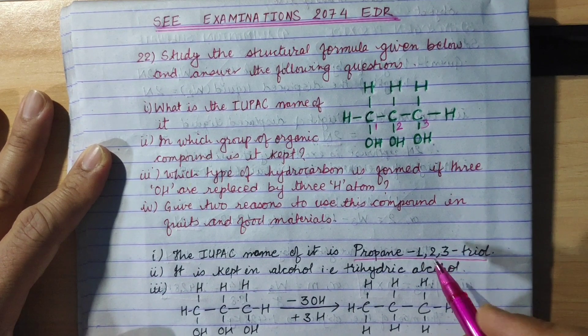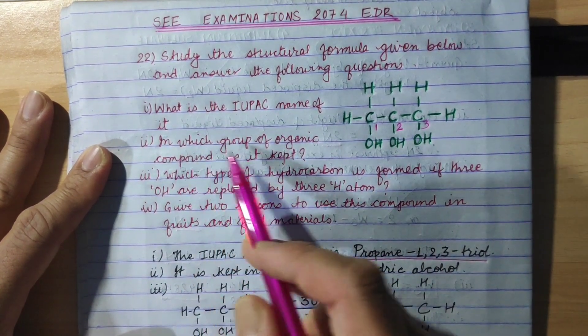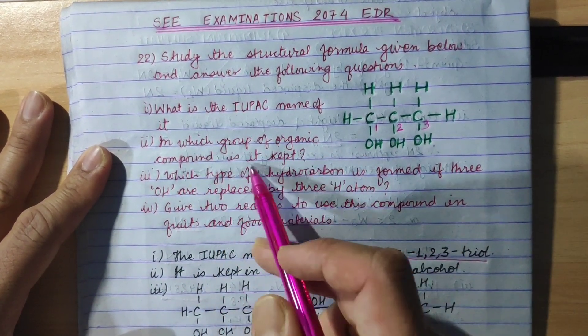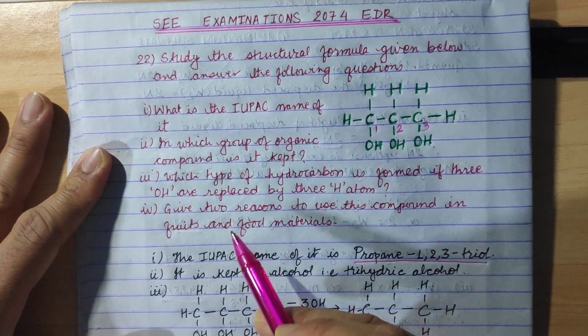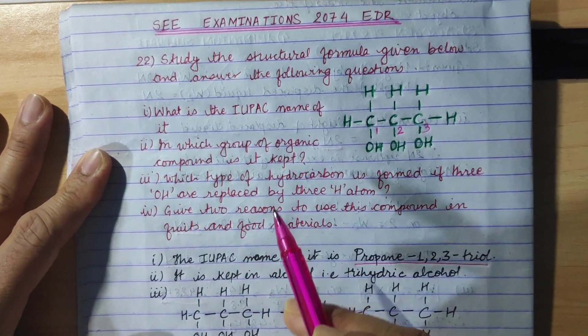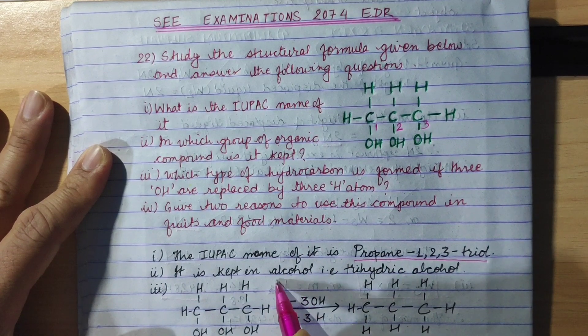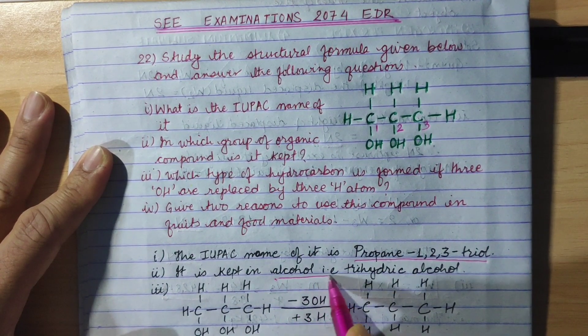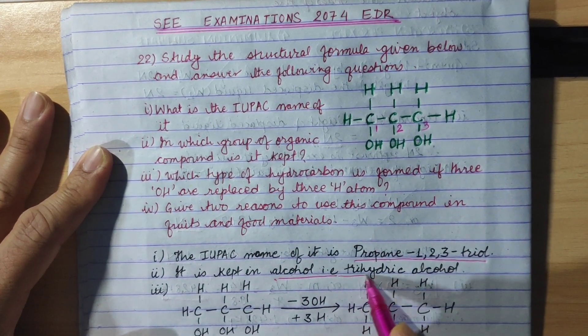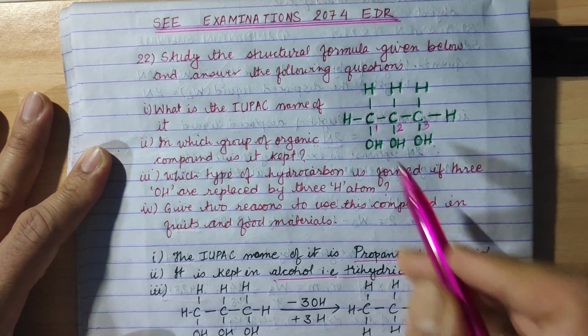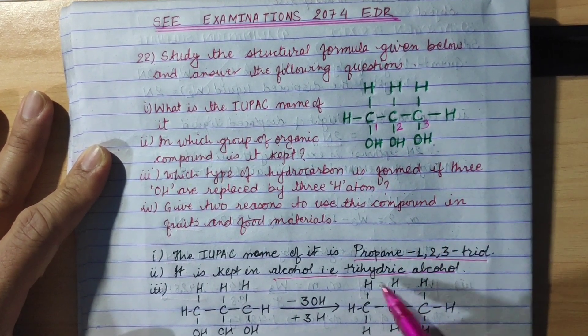Now, second question. In which group of organic compound is it kept? It is kept in alcohol, specifically trihydric alcohol. 3 OH group is trihydric alcohol.